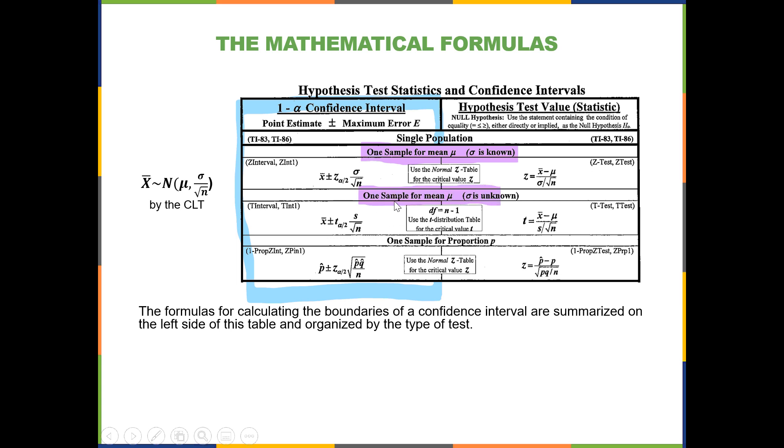For a single sample being used to estimate a population mean where sigma is unknown, in other words, instead of knowing sigma, you know the sample standard deviation, then you'll use these formulas here.